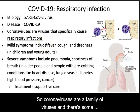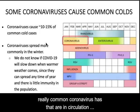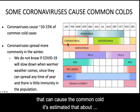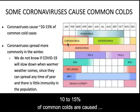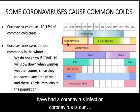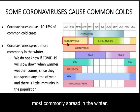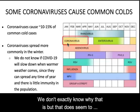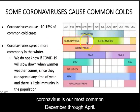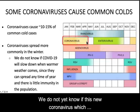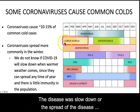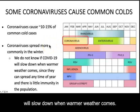Coronaviruses are a family of viruses, and there are some really common coronaviruses in circulation. When you get the common cold, there are a lot of viruses that can cause it — it's estimated that about 10 to 15% of common colds are caused by coronaviruses. So it's a very good bet that all of us have had a coronavirus infection. Coronaviruses are most commonly spread in the winter; we don't exactly know why that is, but if you look at this figure, coronaviruses are most common December through April. We do not yet know if this new coronavirus, which causes COVID-19, is most common in the winter or not — hopefully the spread will slow down when warmer weather comes, but we just really don't know.